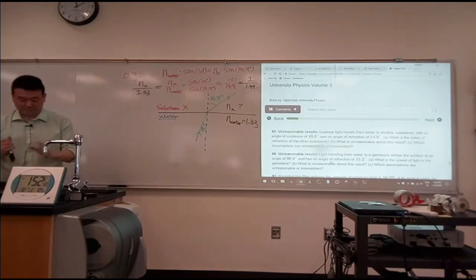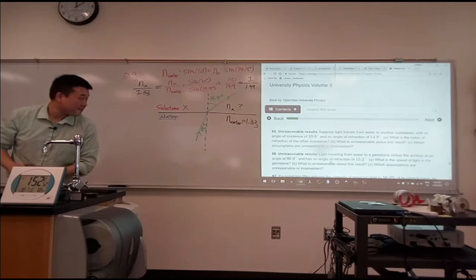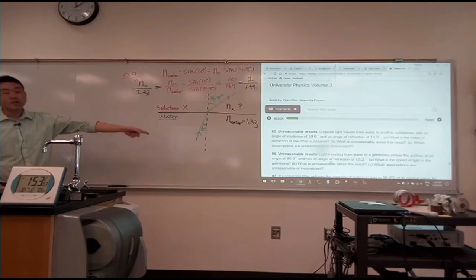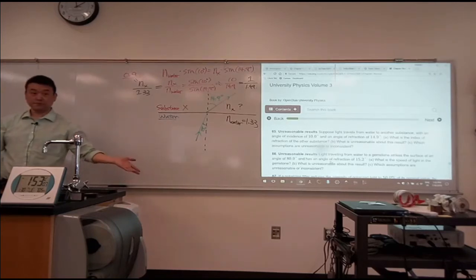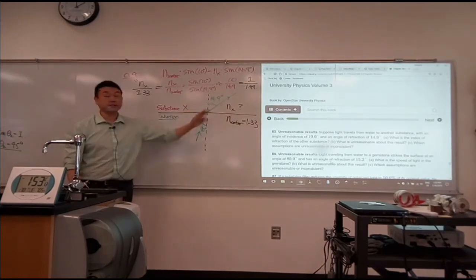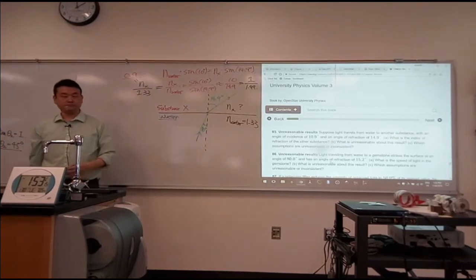All right. That gets about my time. Part C, which assumptions are unreasonable? Yeah, I don't know if there's any assumption you would point out. Or inconsistent, that assumption that light travels fastest in vacuum. So n can be only equal to 1 or greater, that's inconsistent with the parameters that are given here. Okay? Thank you.